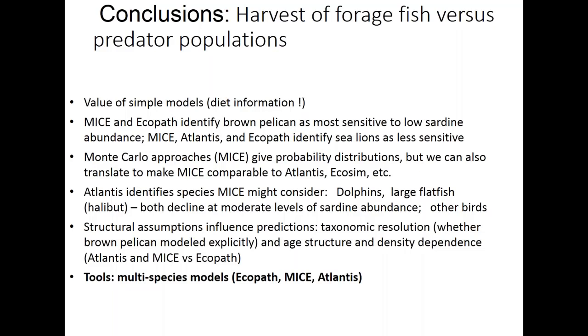To wrap up the sardine case study: it illustrates the value of simple models like Ecopath for assembling diet information and identifying key predators and prey. The MICE and Ecopath models identify brown pelicans as most sensitive to sardine declines; MICE, Atlantis, and Ecopath identify sea lions as less sensitive. The MICE model gives true probability distributions through Monte Carlo approach. Forcing modelers to interact and build models in a co-developed way helped us understand how taxonomic resolution and assumptions about age composition and density dependence really influence results. The tools applied were multi-species models — Ecopath, MICE, and Atlantis.